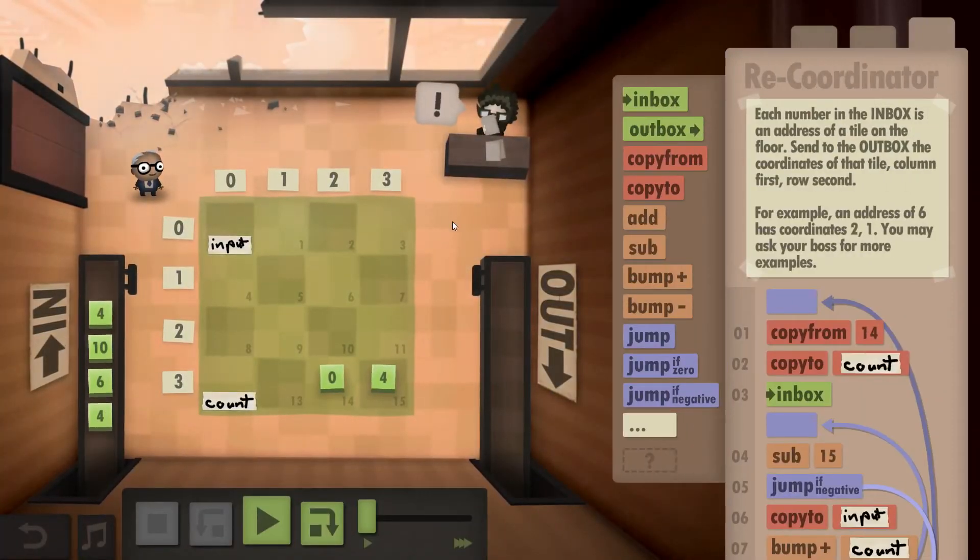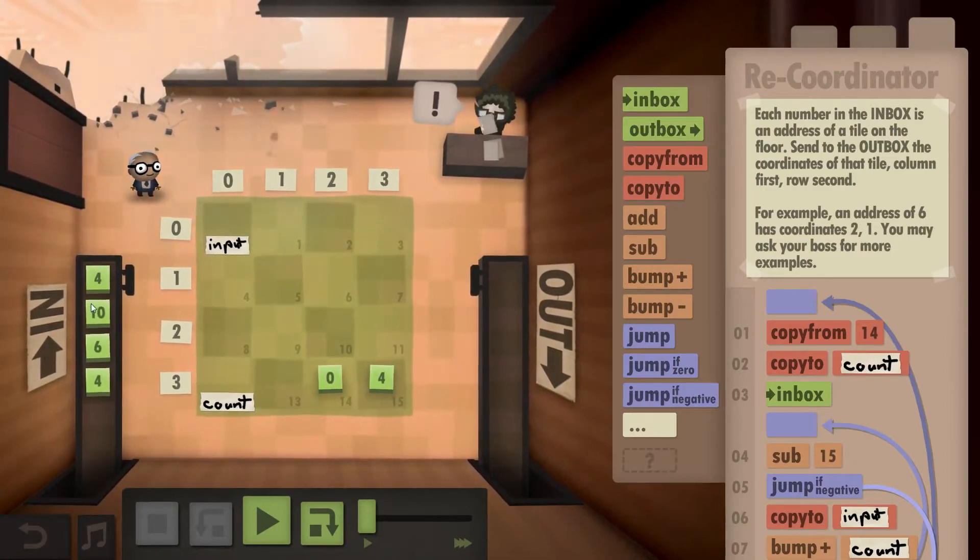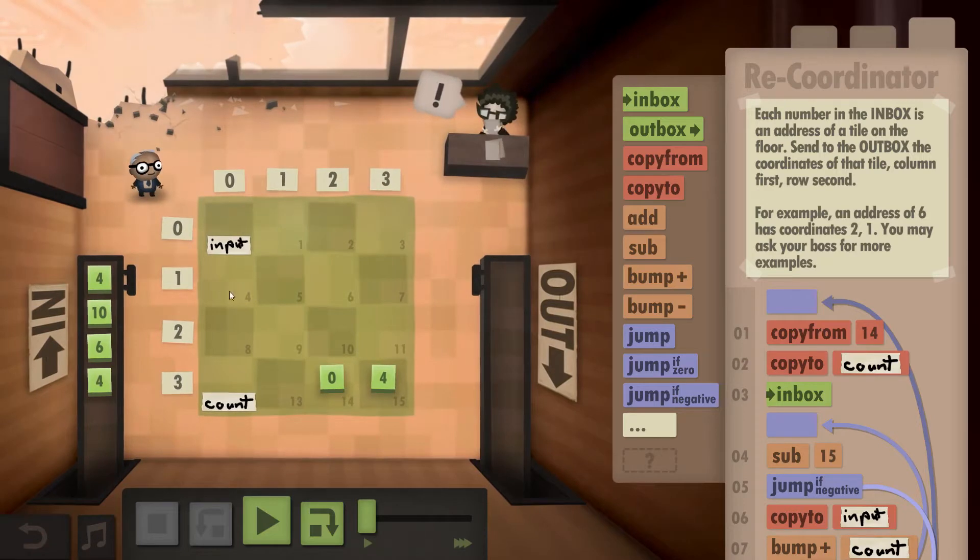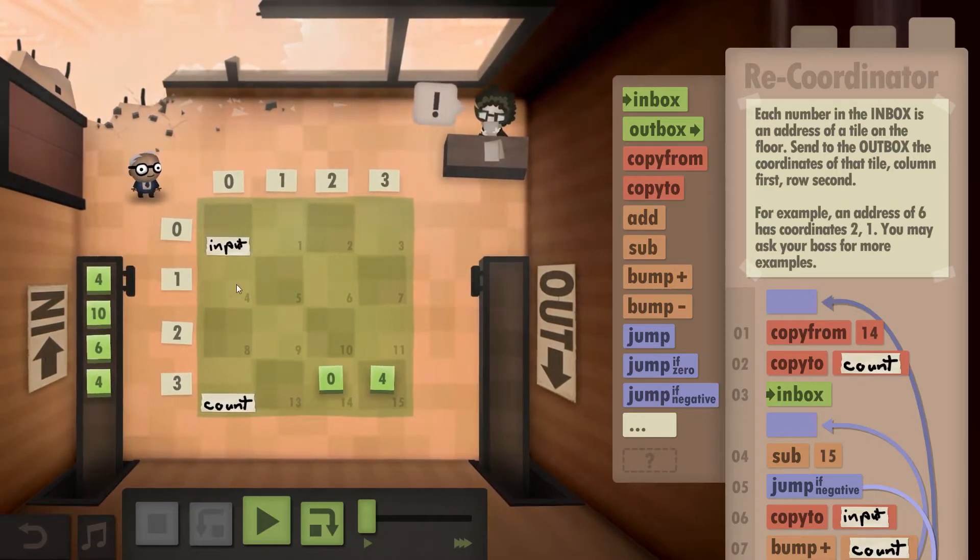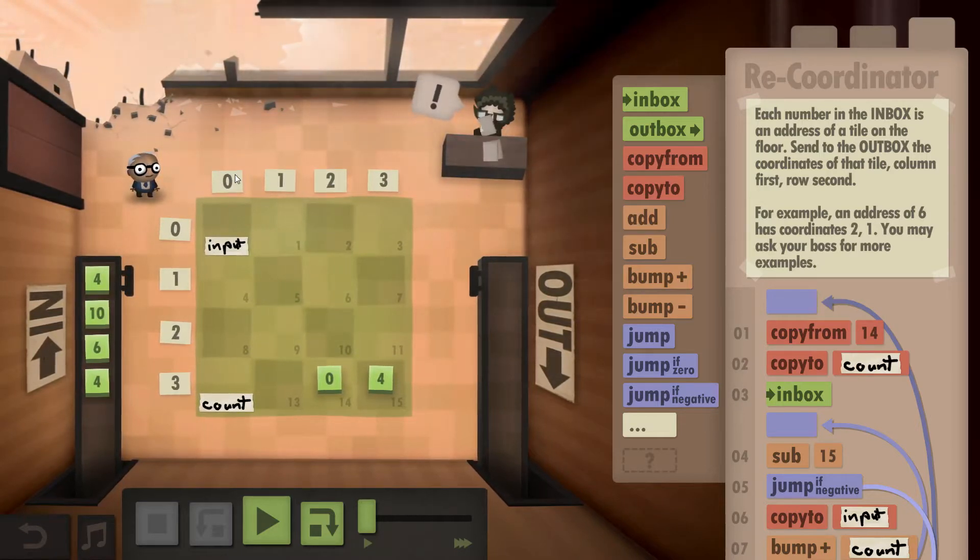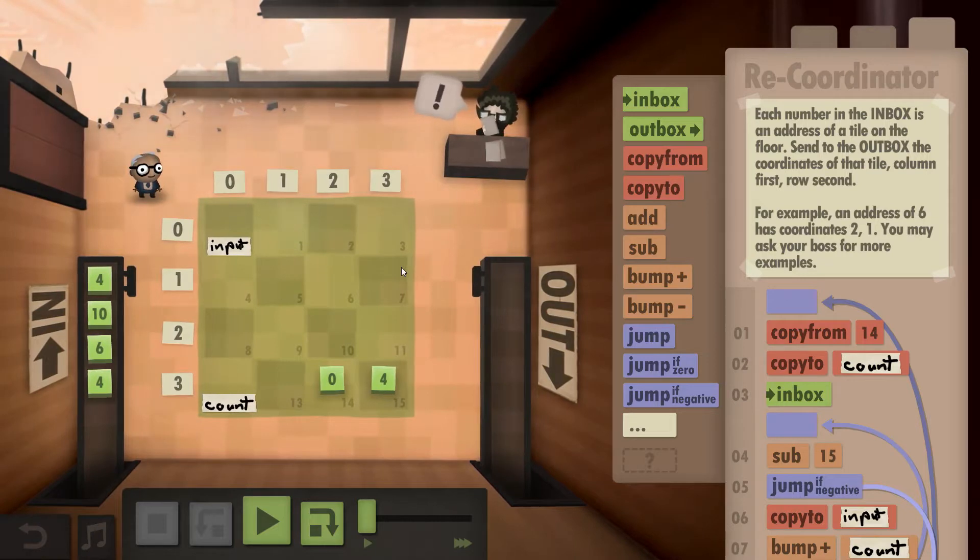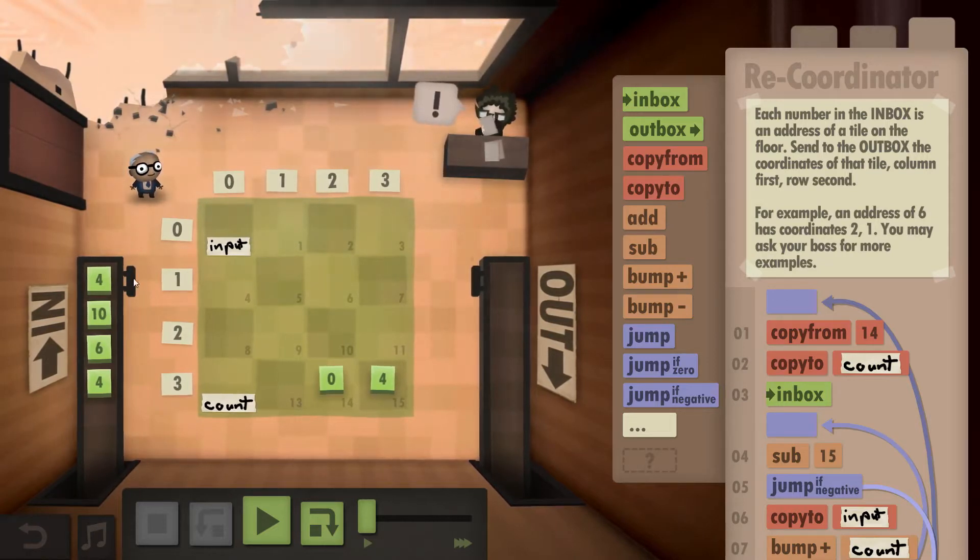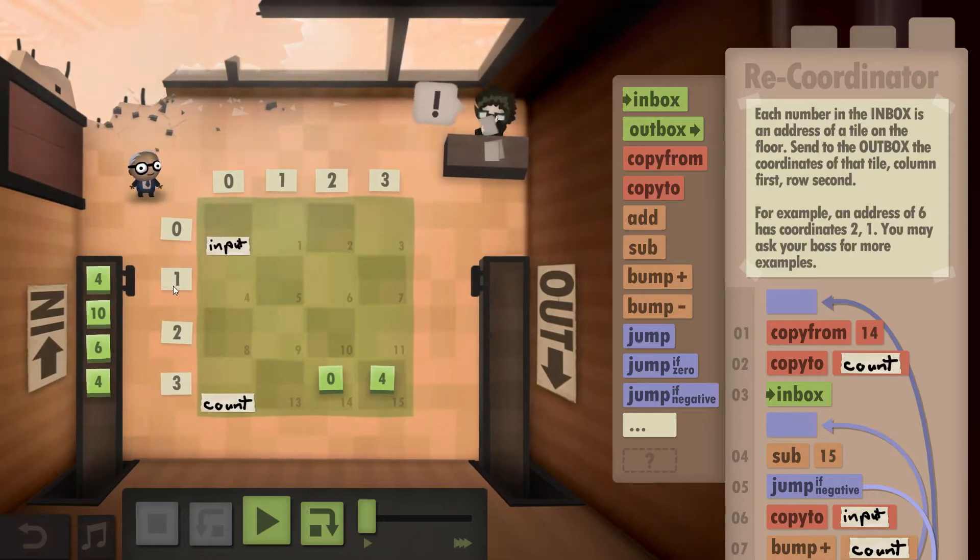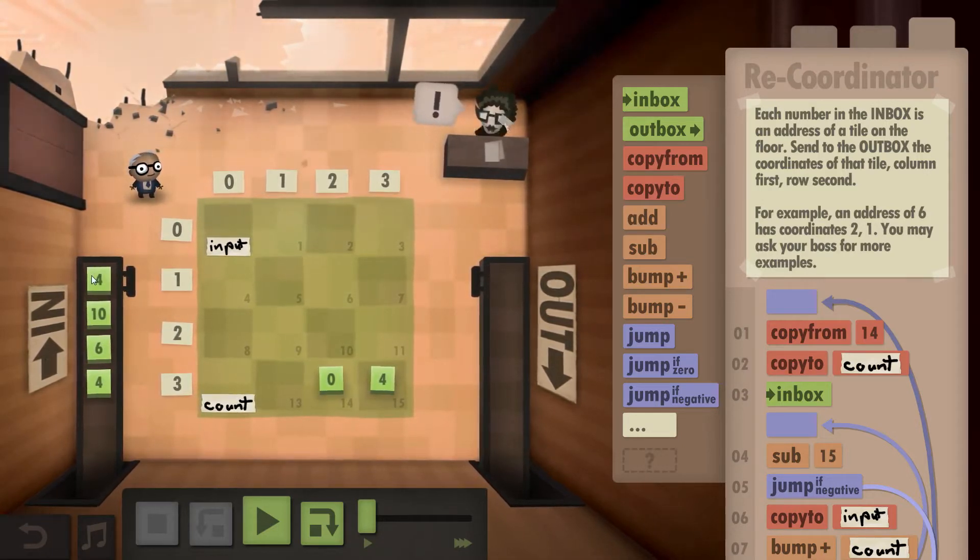The idea here is to translate a number from the inbox into coordinates in this grid. For instance, the 4 would translate into field number 4 and then into coordinates 0 and 1. You're supposed to outbox a column and then row. To do that, you would divide by 4, which would give you the row number, and the modulo would be the column number.